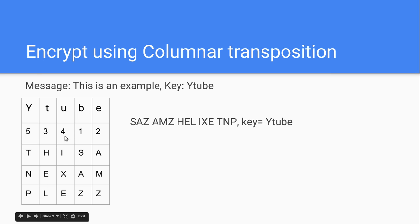You number the letters alphabetically, so B is 1, E is 2 because it's the next alphabetically, then the next one is all the way up at T, which is 3, U is 4, and Y is 5 — because alphabetically B, E, T, U, Y would be the correct ordering.